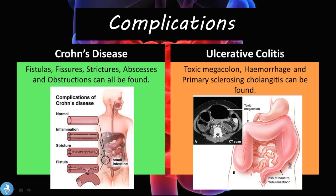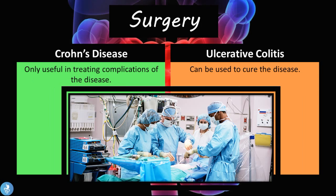In ulcerative colitis we can have toxic megacolon, hemorrhage, and also the development of primary sclerosing cholangitis. In toxic megacolon the patient is unable to pass stool, stool collects within the colon causing it to increase in size, the patient's abdomen becomes distended, and eventually this can rupture and cause peritonitis — a life-threatening emergency.